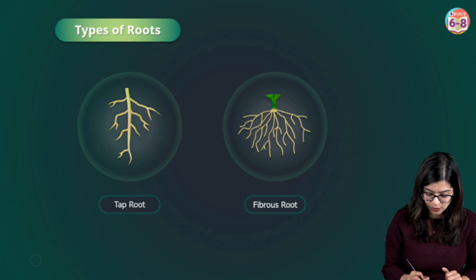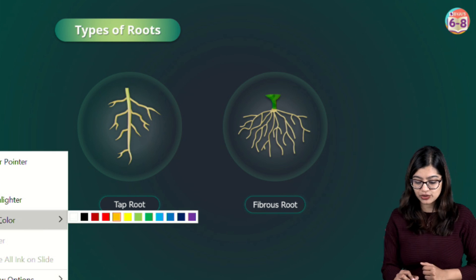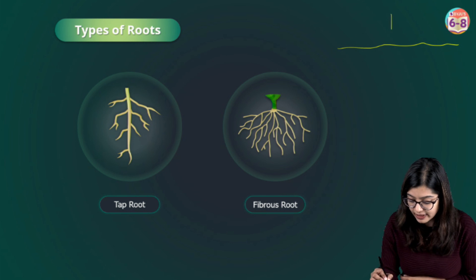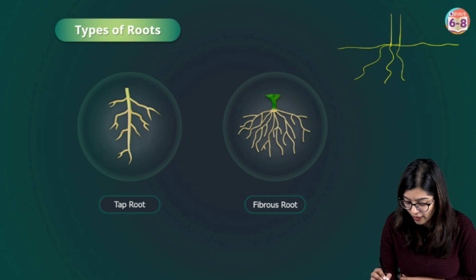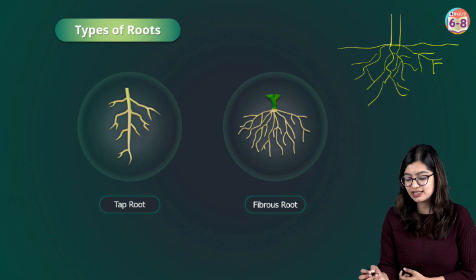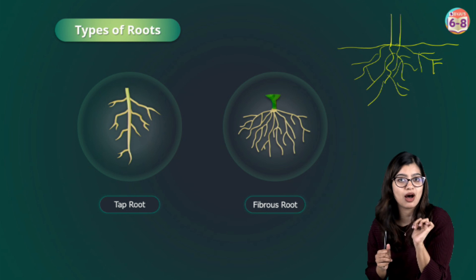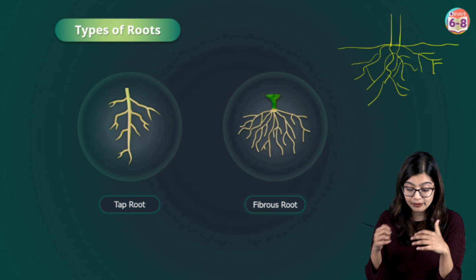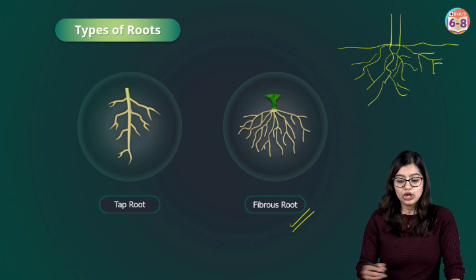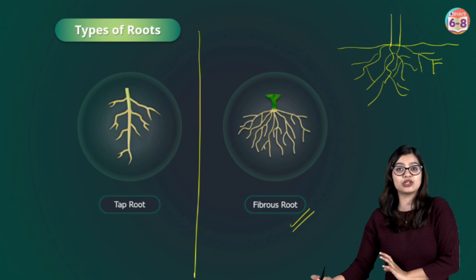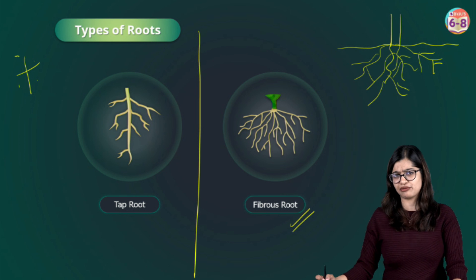Next we have the fibrous root system. Unlike the tap root where there is one main root, in fibrous root, from one point there is various branching — many roots arise from one point, like a fiber. In plants like grass or wheat, we observe fibrous root system. They can ask you in the examination to differentiate between tap root and fibrous root with examples, and now you know what to write.